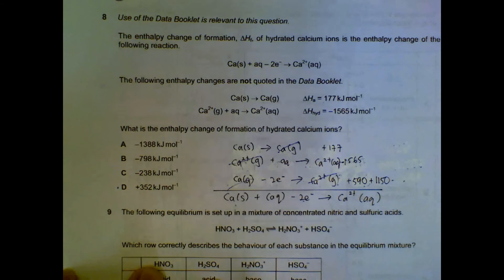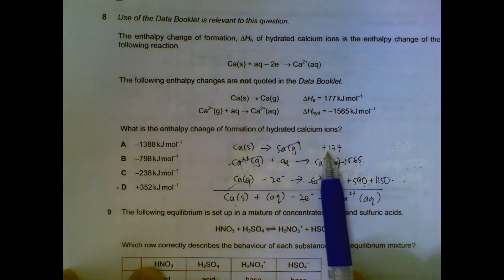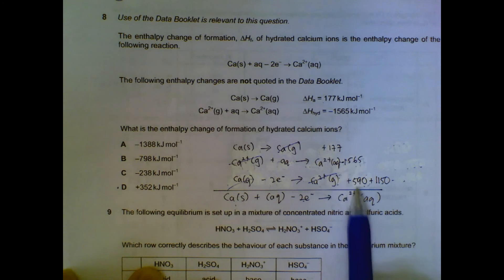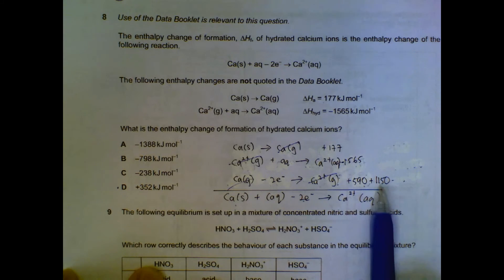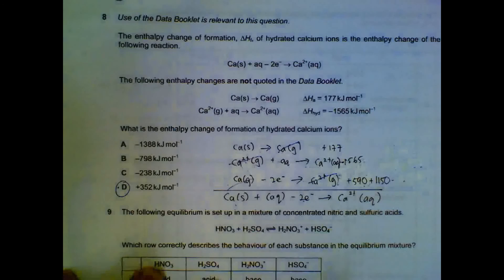Ca2+ gas equals on this side. So once we have all these numbers, we just have to take plus 177 minus 1565 plus 590 plus 1150, that will give us plus 352 kilojoules per mole.